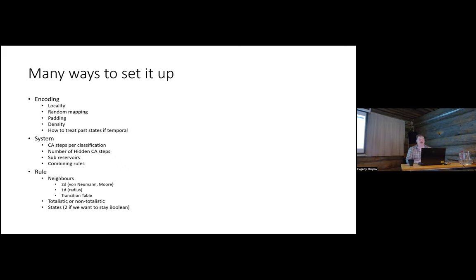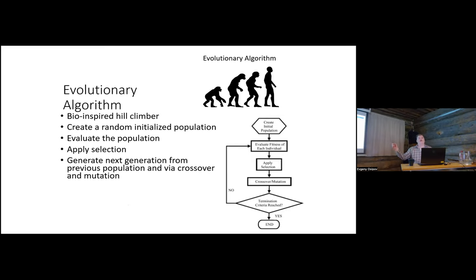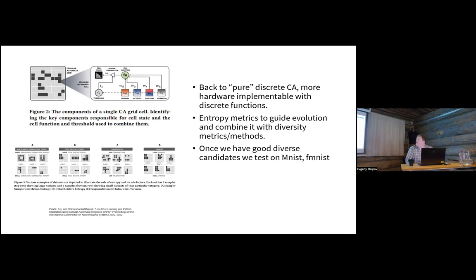The specific problem I'm trying to solve is that even with this simple system, when we talk about vector expansion there are many ways to set it up. How do I pick between good methods? In the bio-inspired field, you encode the choices into a genotype and use a genetic algorithm to find good combinations — that's really the gist of what I'm going to do. Does everyone know what an evolutionary algorithm is?